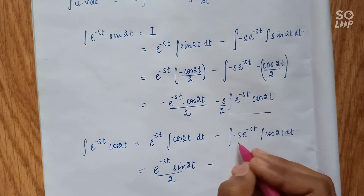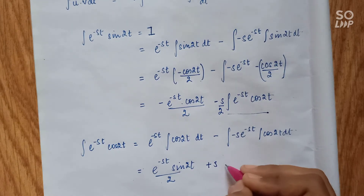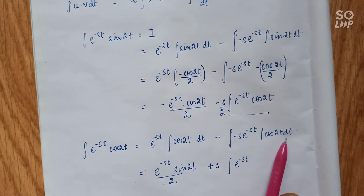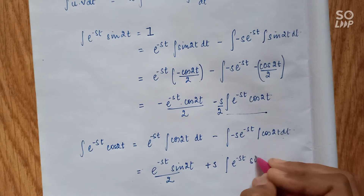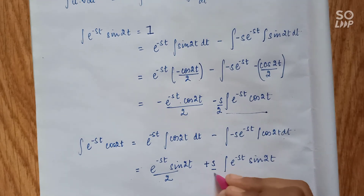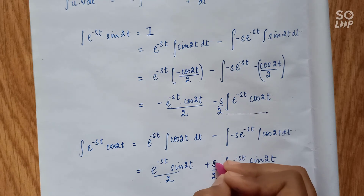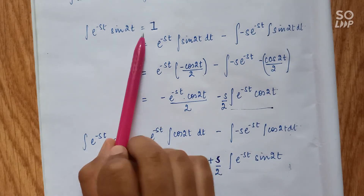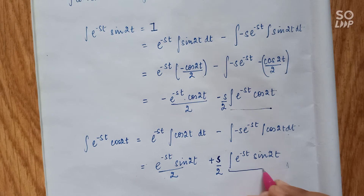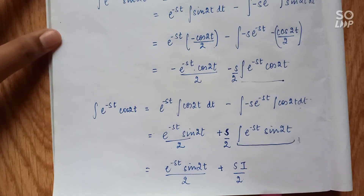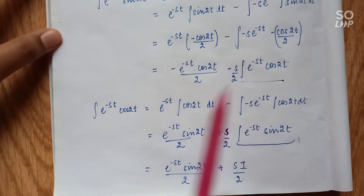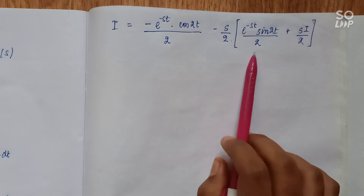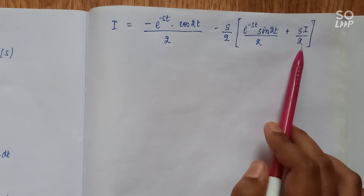Applying by parts to the e^(-st)·cos(2t) integral: the integration of cos(2t) is sin(2t)/2, and we take s and 2 outside as constants. So this gives e^(-st)·sin(2t)/2 minus the integration of e^(-st)·sin(2t)/2. Notice this last integral is exactly I, so we substitute I back in place of it.